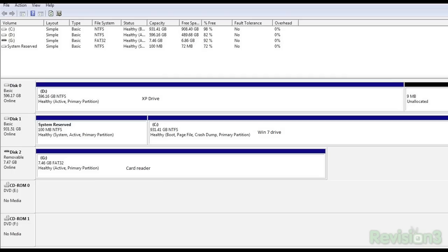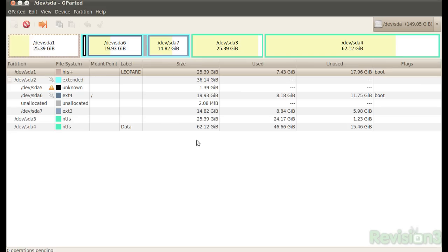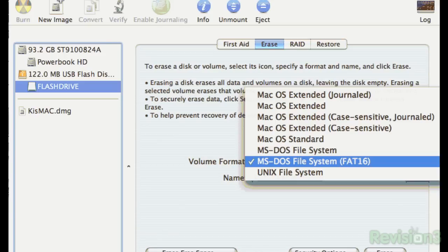Partitions are the smaller, usable sections of a hard drive that your computer can see as separate drives. Windows Disk Management, Mac's Disk Utility, and Linux's GParted are common examples of partitioning applications. It's often useful to put your system on one partition and your data on another.